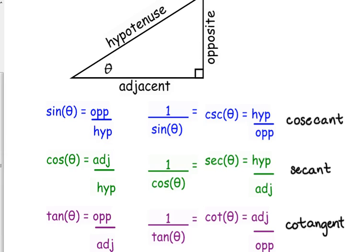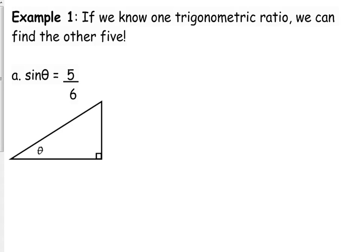So we're going to deal with these six ratios today. If we are given information about one trig ratio, then we can easily find the other five. So if we are told that the sine of theta is equal to five over six, I want to find the other five trig ratios. Now I don't care what theta is.